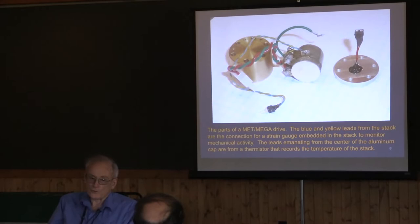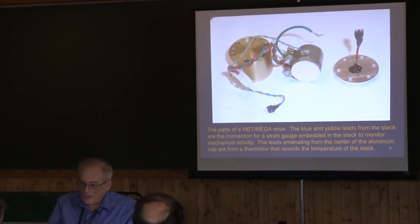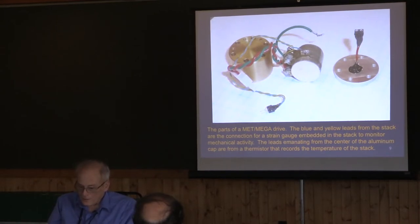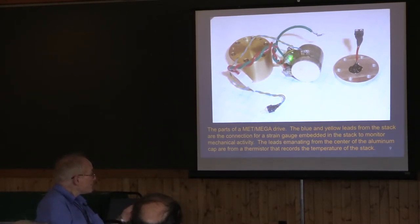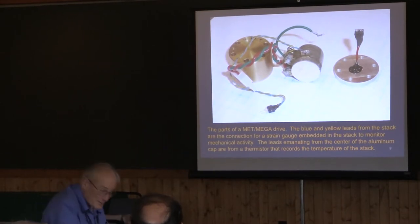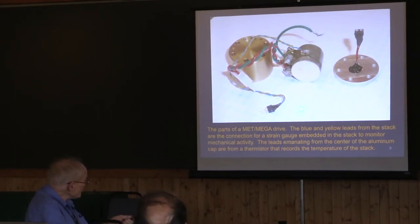This is a collection of the actual components that go into one of these devices: the brass mass on the left, the PZT stack in the middle, and the aluminum cap on the right. You can see the connection to the strain gauge — it's the blue and yellow twisted pair that comes off the stack. That's the strain gauge electrode tab, and this is the connection over here.